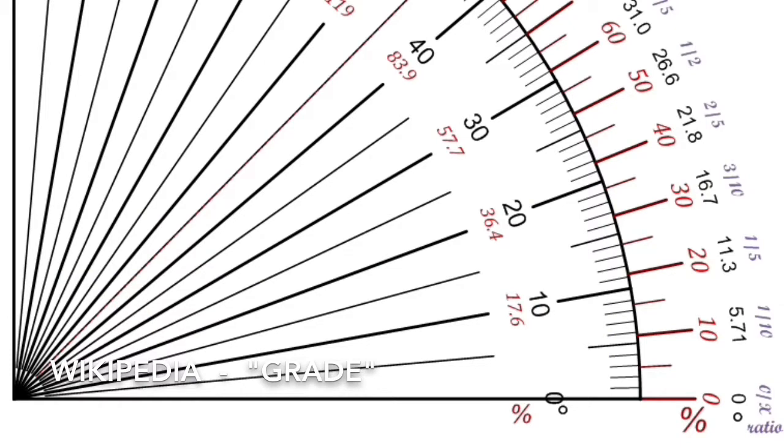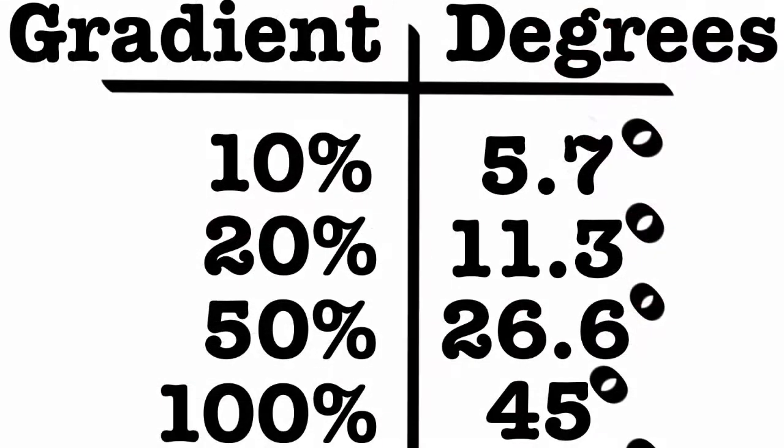In this diagram on the far right, starting with the purple, you have a simple ratio of height to horizontal run. Then inside that is the angle in degrees, and inside that is the percent gradient—just different ways to measure the angle.